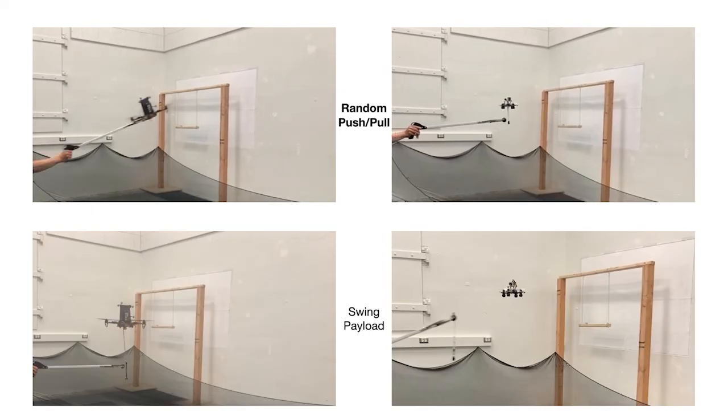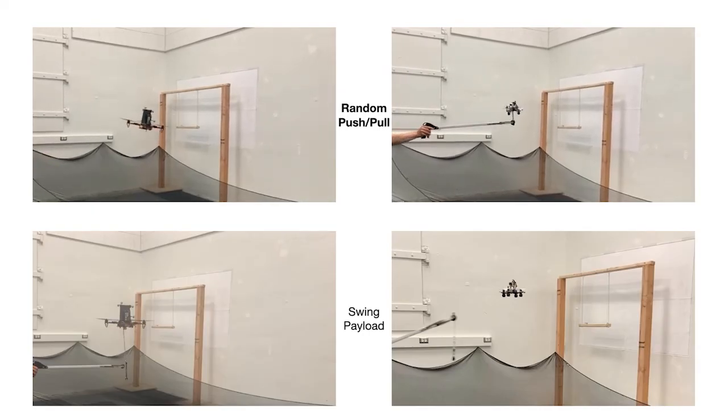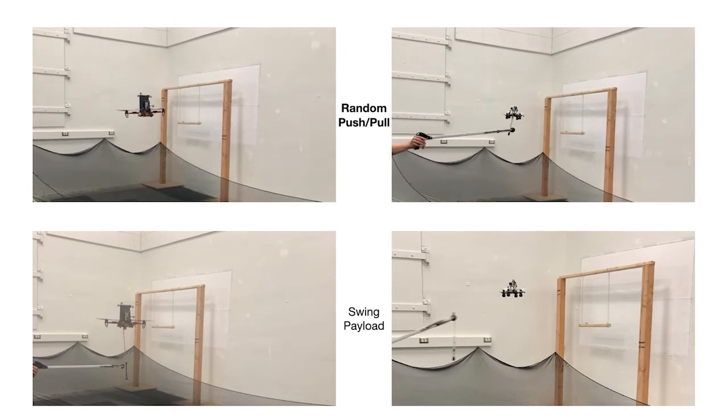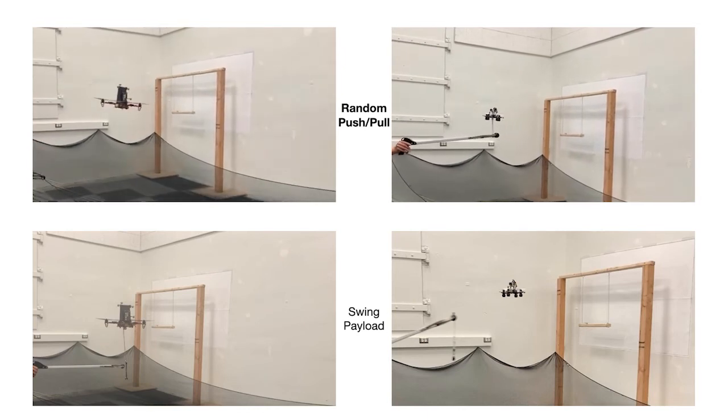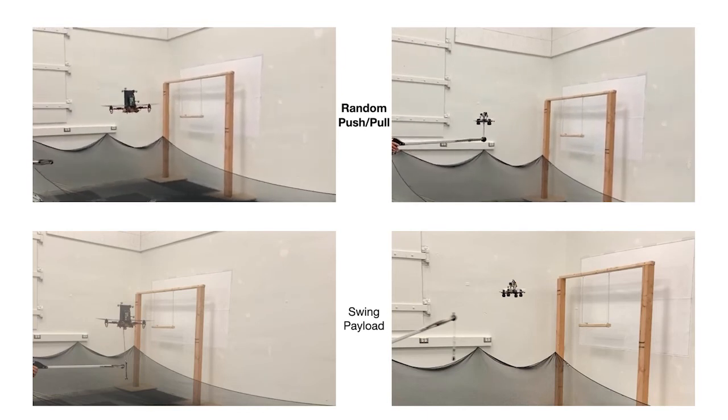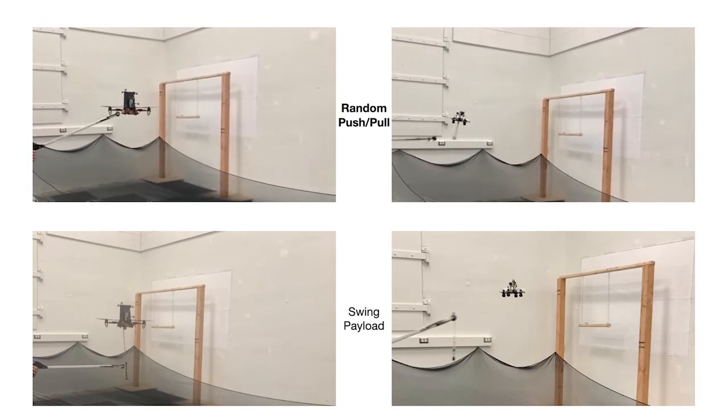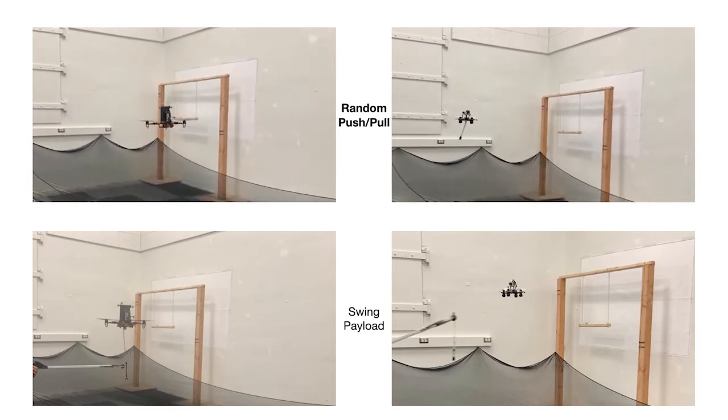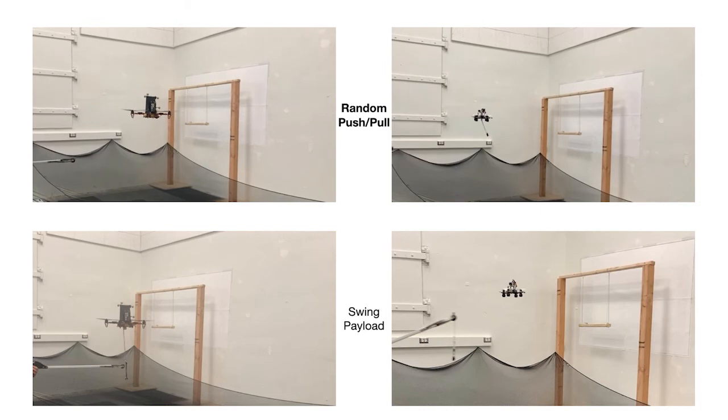Finally, our controller also shows rejection of disturbances unseen at training time, such as random push or pull, and a swing payload.